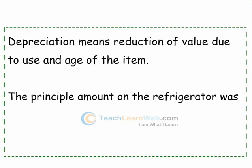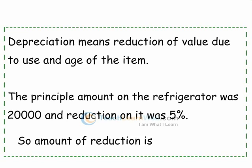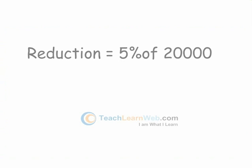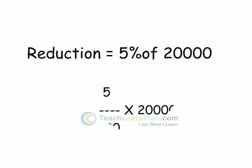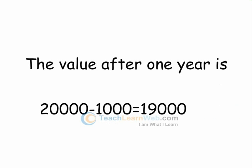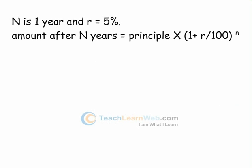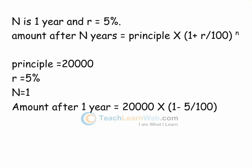The principal amount on the refrigerator was Rs 20,000 and the reduction on it was 5%. We can directly find the value using the depreciation formula, where N is one year and R is equal to 5%. If the value is appreciated, i.e. increased, then the formula becomes the appreciation formula.